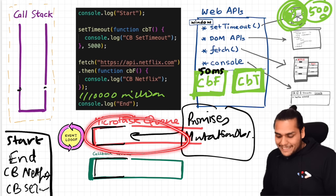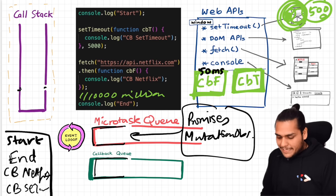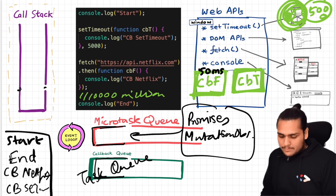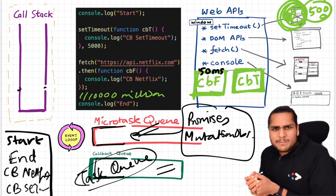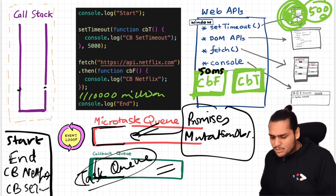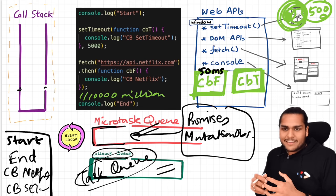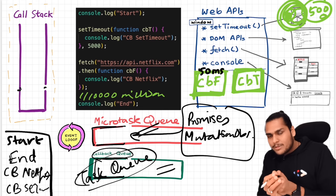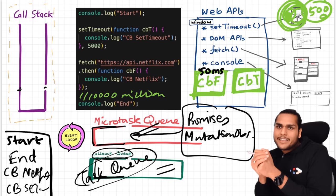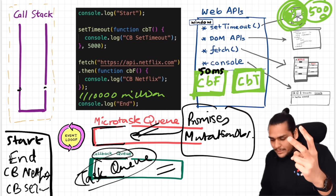This micro task queue is also given higher priority. The callback queue is also known by the fancy name 'task queue.' Some people call this queue the task queue, and this is the micro task queue. Whatever callbacks come through promises and mutation observer go to the micro task queue with higher priority, and all other callbacks go to the callback queue.